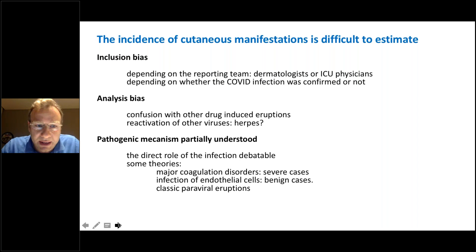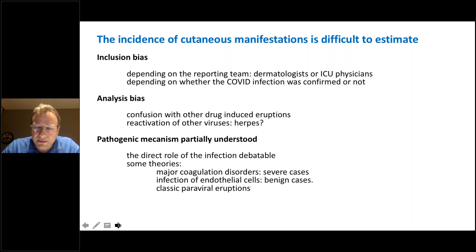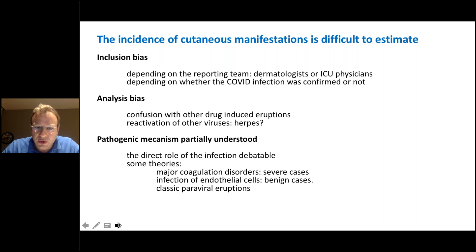Second is the analysis bias. First, the confusion with other drug-induced eruptions. COVID-19 patients normally receive multiple drugs, especially in hospital, so sometimes we don't know if the eruption is due to the drug or due to the COVID infection. Second, the reactivation of other viruses — is it due directly to COVID or to a reactivation like the herpes group viruses? Finally, the pathogenic mechanism is partially understood. In severe cases it may be due to major coagulation disorders; in benign cases, probably infection of endothelial cells or classical paraviral eruptions.